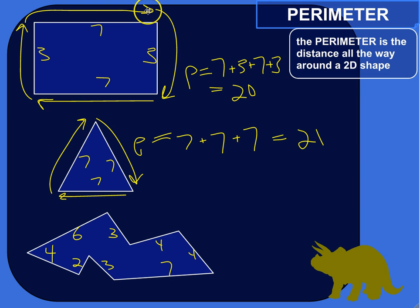And I imagine it just like walking around the shape. So, for this rectangle here, the perimeter would be 3 plus 7 plus 3 plus 7, all the way around. So the perimeter would be 20.